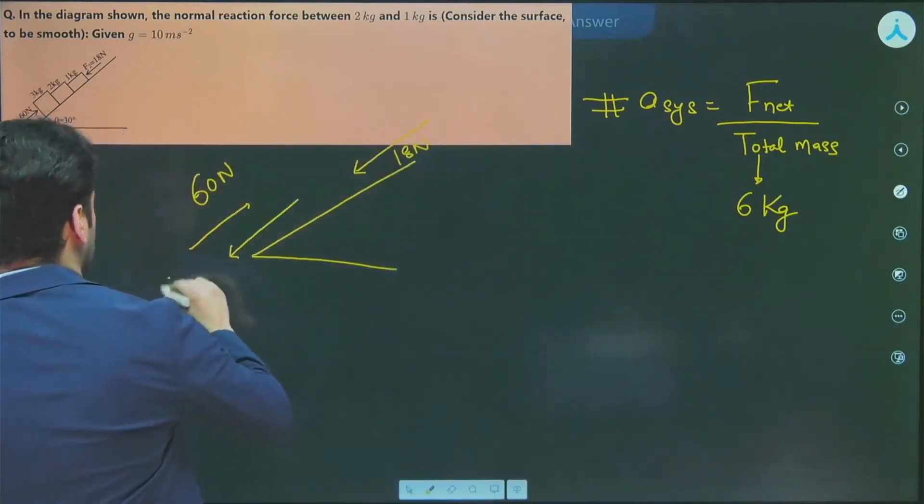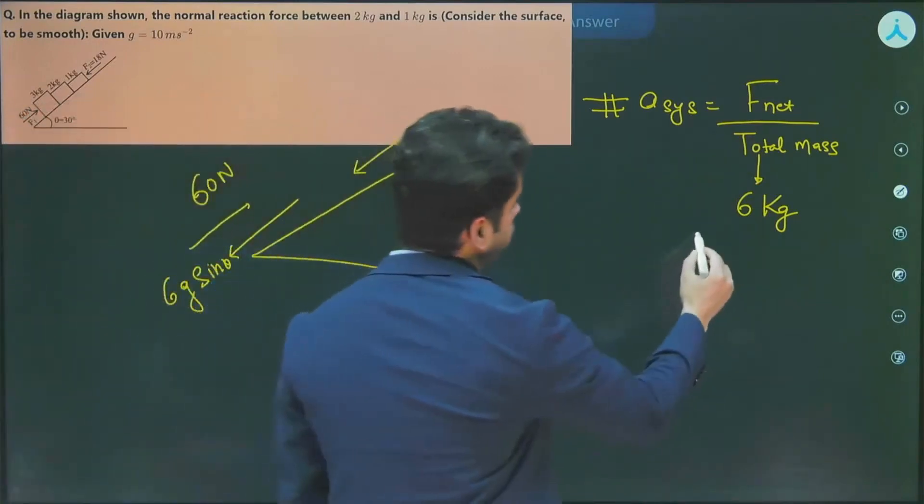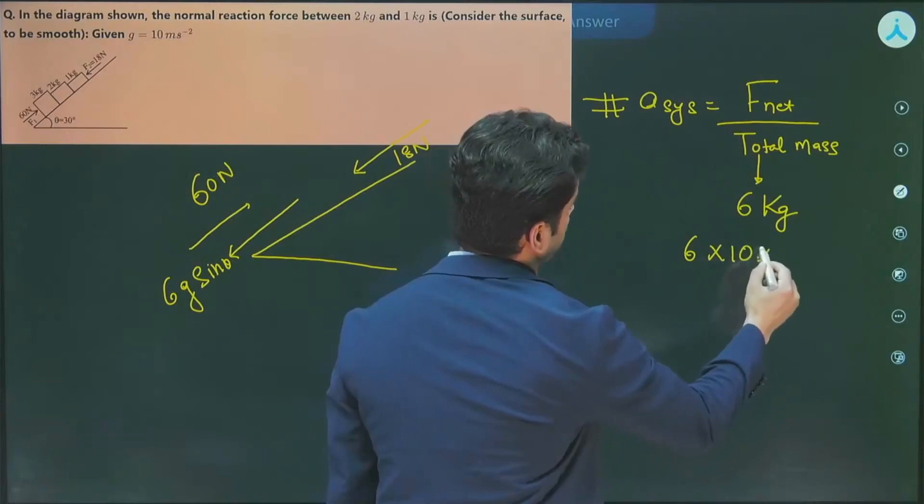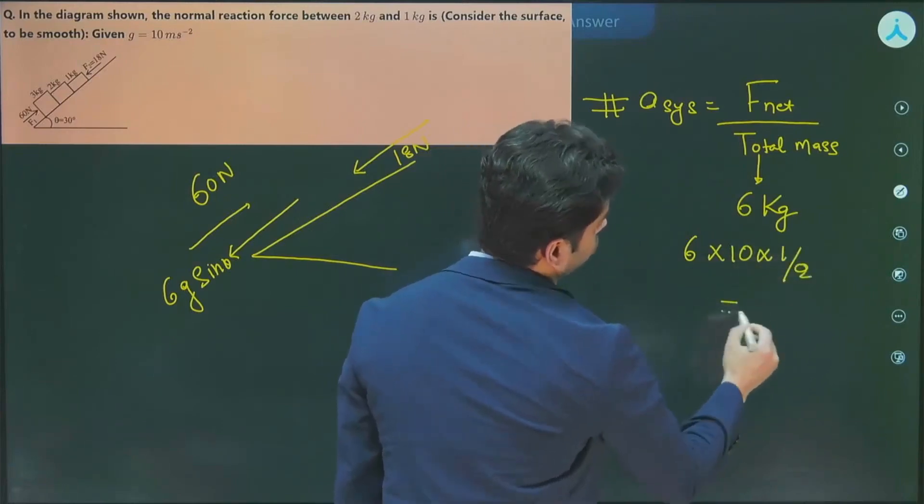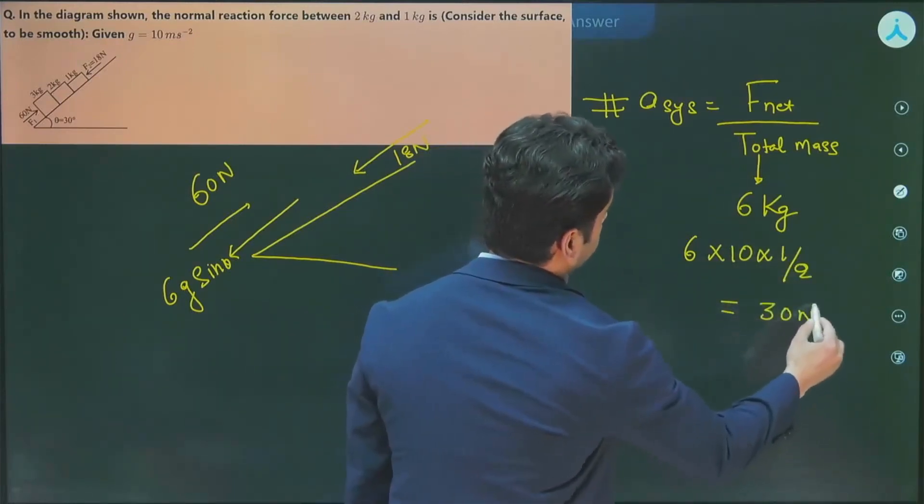So 6G sine theta will be in this direction. What is the value of 6G sine theta? 6 into 10 into sine 30 is 1 by 2, so it is 30 N.